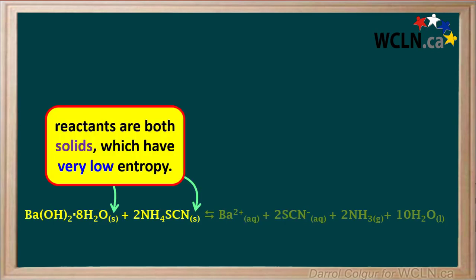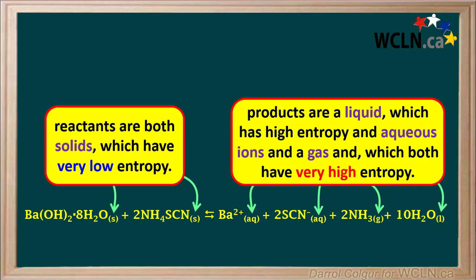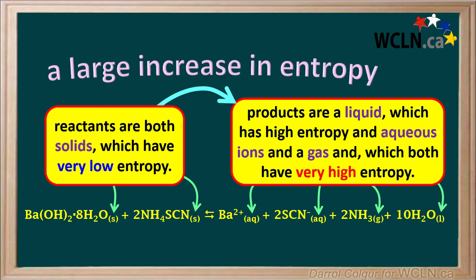We'll summarize the phases or states by stating that reactants are both solids, which have very low entropy, while the products consist of a liquid, which has higher entropy than a solid, as well as aqueous ions and a gas, which both have very high entropy compared to a solid. So going from solids to liquid, gas, and aqueous ions brings about a large increase in entropy as products are formed.